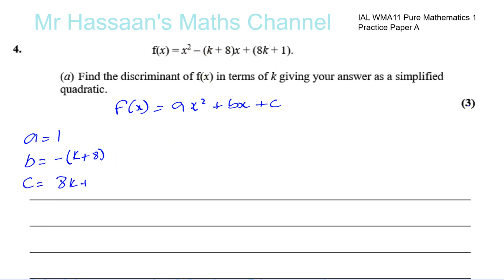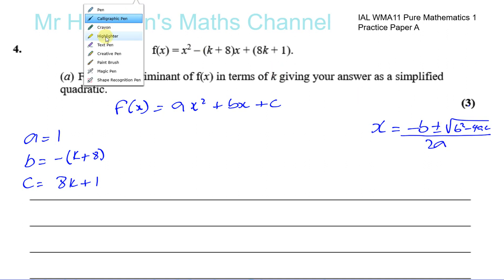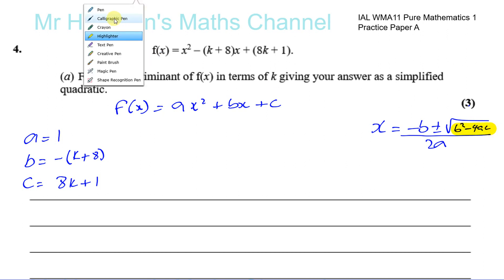We know the discriminant of the quadratic equation is the part of the quadratic formula which is under the square root. This is the discriminant: b squared minus 4ac. It's called the discriminant because it discriminates between how many solutions the quadratic equation will have.